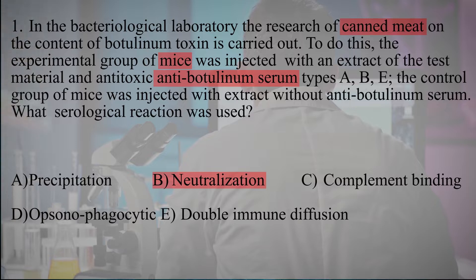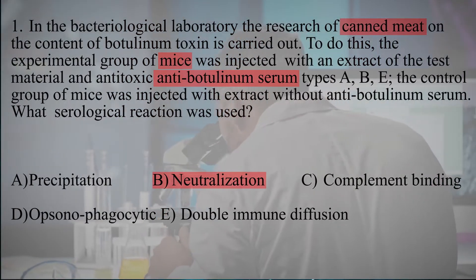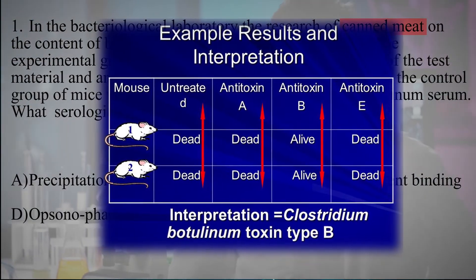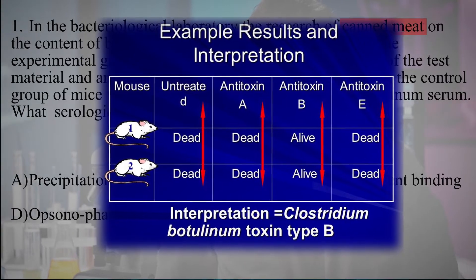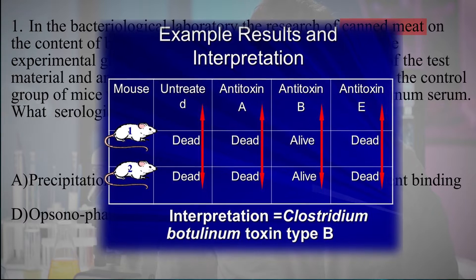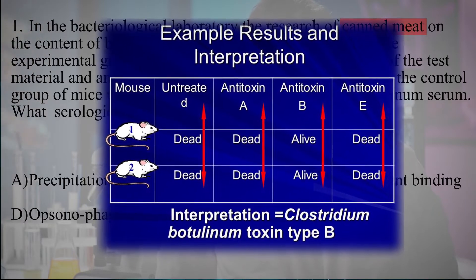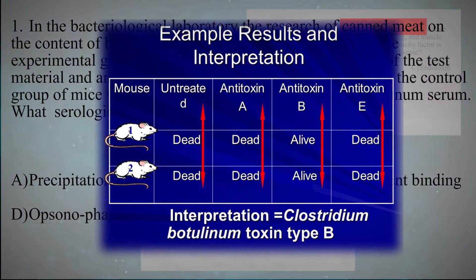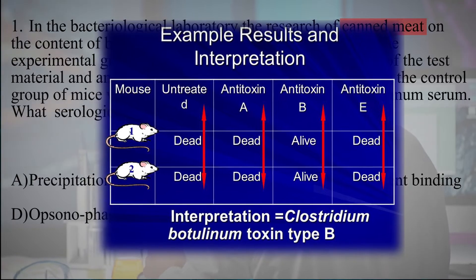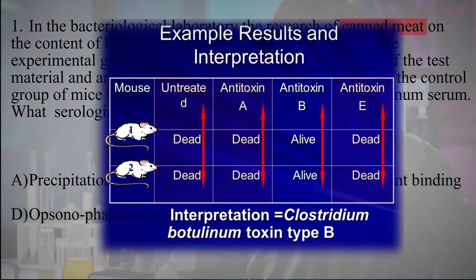Botulinum toxin neutralization reaction is performed on white mice. Intraperitoneally, mice are injected with the test material in a mixture with monovalent antibotulinum serum. Observations are carried out for 4 days. During this time, mice that are not protected by antibotulinum serum against the serotype of the pathogen that caused the disease will die.